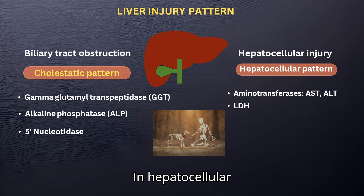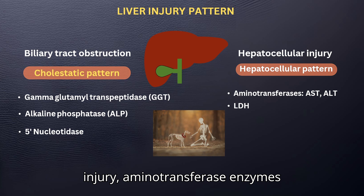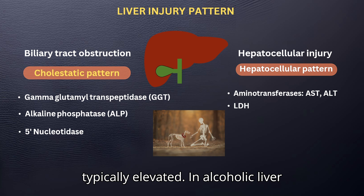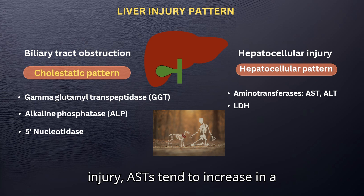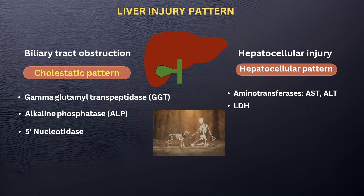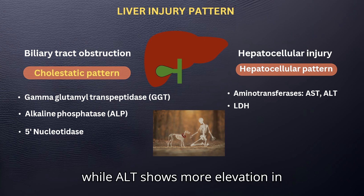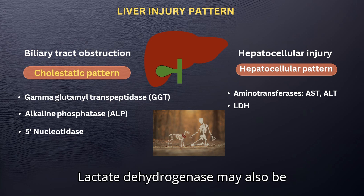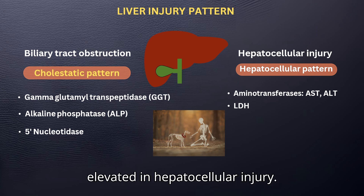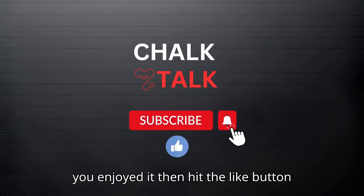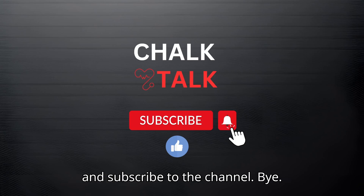In hepatocellular injury, aminotransferase enzymes like ALT and AST are typically elevated. In alcoholic liver injury, AST tends to increase in a higher ratio compared to ALT, while ALT shows more elevation in cases of viral hepatitis. Lactic dehydrogenase may also be elevated in hepatocellular injury. Thank you and I hope this was useful. If you enjoyed it, hit the like button and subscribe to the channel.